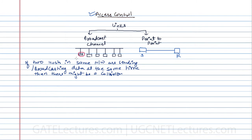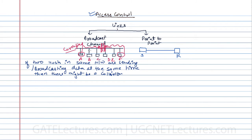Assuming we number the hosts A, B, C, D, E, and F — if host A wants to transmit some data through the network and at the same time host F also decides to transmit data, then if both transmit at the same time, their data will collide somewhere in the middle. The other hosts receiving the data will receive corrupted data, and corrupted data is not useful.